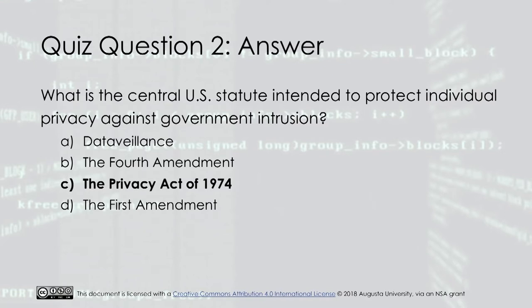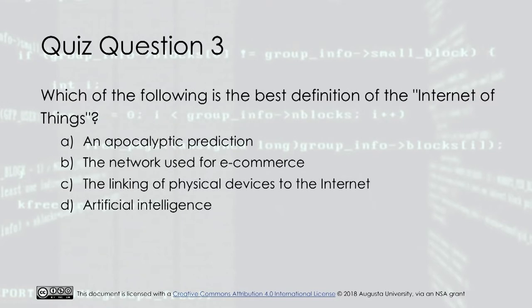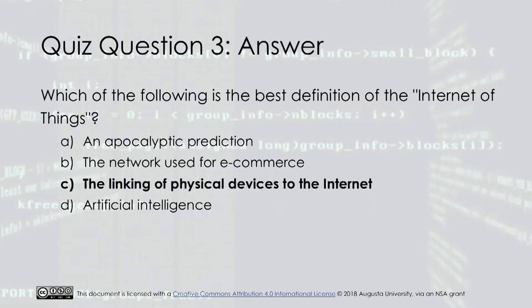Quiz question three: Which of the following is the best definition of the internet of things? A) An apocalyptic prediction. B) The network used for e-commerce. C) The linking of physical devices to the internet. D) Artificial intelligence. The answer is C: the linking of physical devices to the internet.